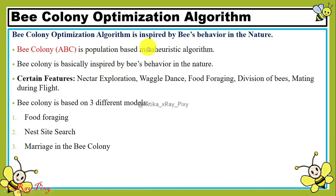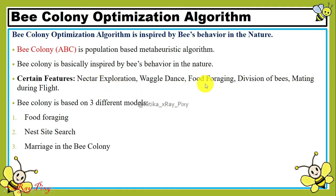First we will discuss the Bee Colony Optimization Algorithm. This is a meta-heuristic algorithm inspired by the behavior of bees in nature. It has certain features, for example: nectar exploration, waggle dance, food foraging, division of bees, and mating during flight. Bee Colony Optimization is based on three different models: food foraging, next site search after food foraging, and marriage in the bee colony.